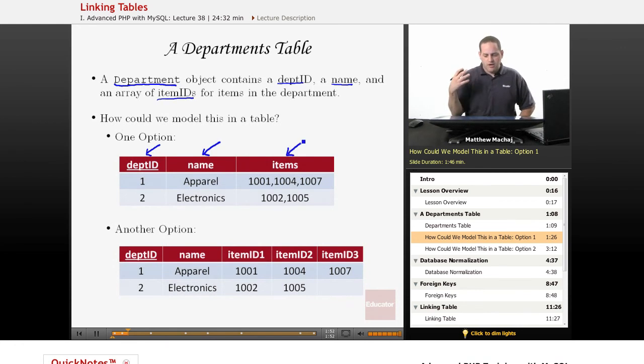In this case, as has been the case in our departments.txt file, we've been storing all of the item information in a comma delimited list that shows all of the items in the particular department. So we could simply just move that comma delimited string into this items column of our department table. So here would be a department with three items, and here would be a department with two items, for example.